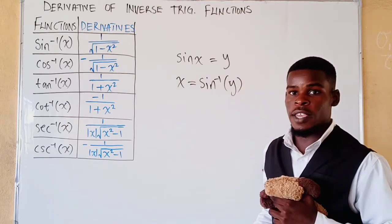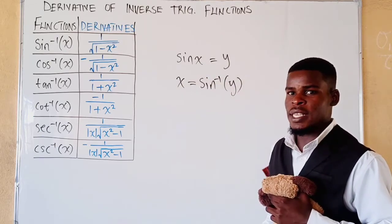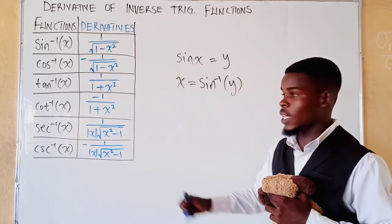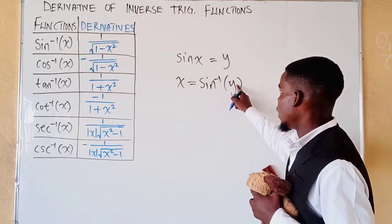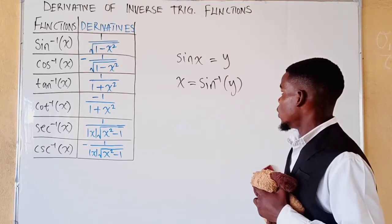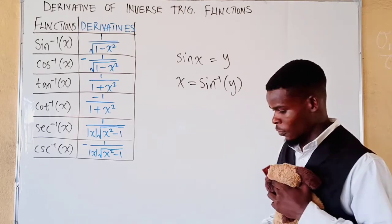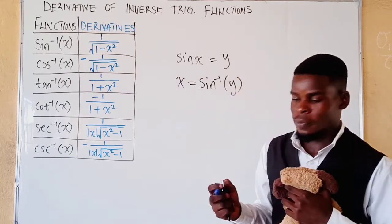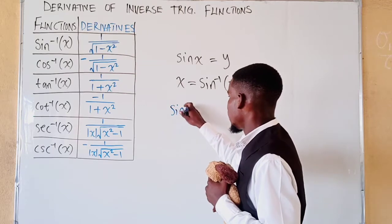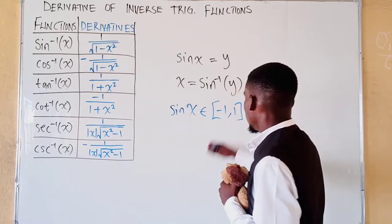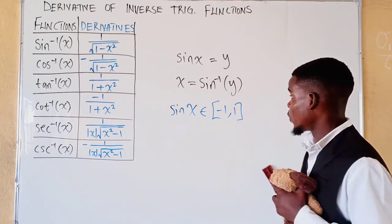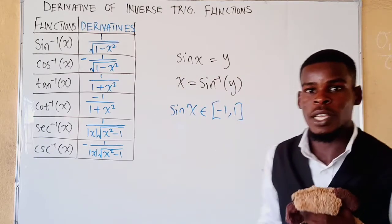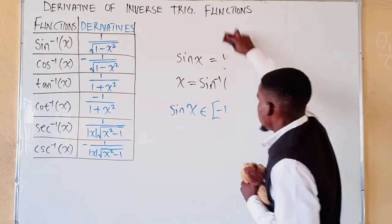Whenever we have sine of something, the result is a value where the input is an angle. To recover the angle, we take the sine inverse of both sides — sine inverse of sine x gives you back the angle. The domain of inverse trigonometric functions is restricted because sine of x lies between negative one and one, so the inverse only works for that domain from negative one to one.